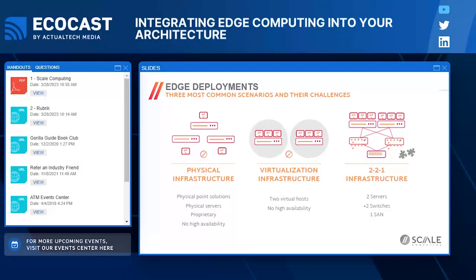In edge deployments we generally see a lot of physical infrastructure — often physical point solutions, and many times people don't even know how many of these things they have. We'll walk into an environment and see the box that controls the freezer temperature, the server that is the back end for the point-of-sale system, the video security system — all different things relying on physical infrastructure. We also do see virtualization in more mature or larger-scale environments.